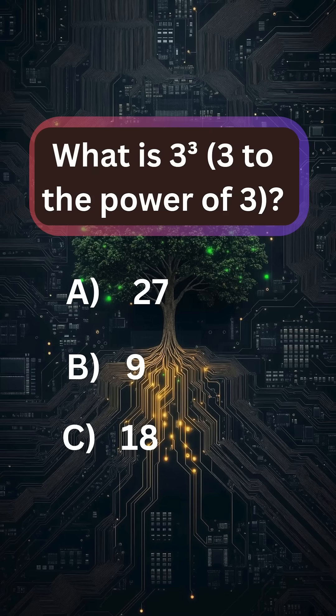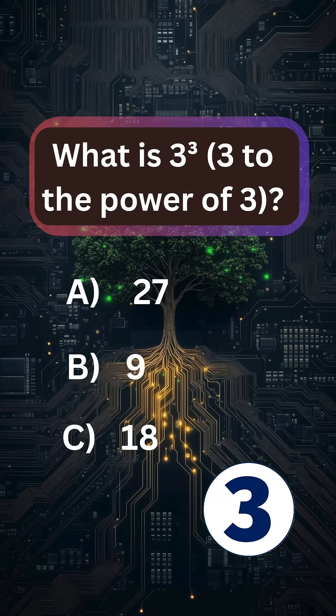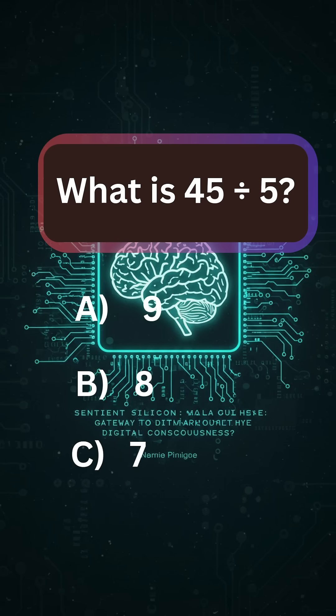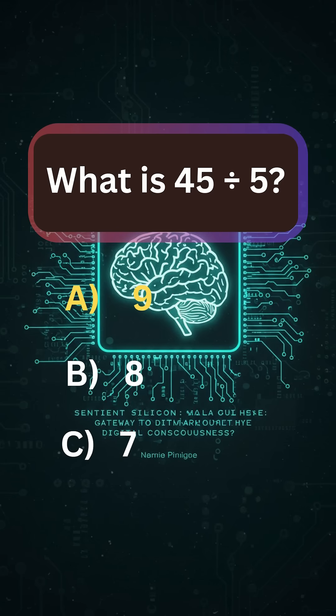What is 3 cubed, 3 to the power of 3? Answer: 27. What is 45 divided by 5? Answer: 9.